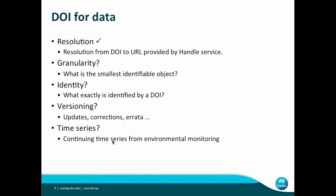For DOI for data, the resolution question is solved — there's a way to go from a digital object identifier to the URL, and this resolving service is provided by the Handle service. But what do we actually name? There's the question of granularity: what is the smallest identifiable object we want to identify? What exactly is identified by a particular DOI? How do we handle versions, corrections, errata? And in environmental monitoring, how do we deal with continuing time series? These questions arose very early on, and the underlying issues — granularity, identity, versioning, time series — haven't really changed.